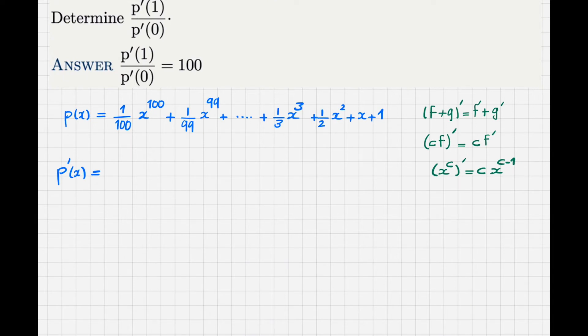If I use all this information, the derivative is 1 over 100. Then I concentrate on the derivative of this one. So 100 goes down and then x to the power of 1 less, which is 99. And the next one, again, 1 over 99 is there. And then the derivative of x to the 99, 99 goes down and then I will have x to the 98. And this process will continue.